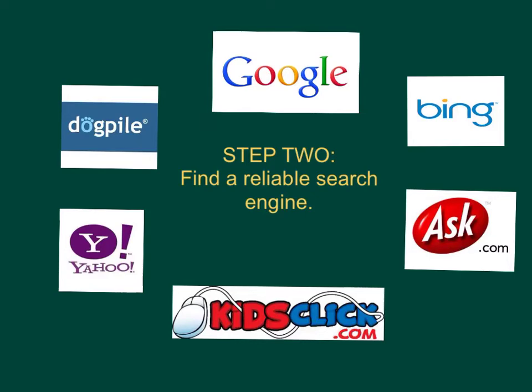Step two is to find a reliable search engine - meaning a trusted website. Some favorites are Google, Bing, Ask.com, Dogpile, and Yahoo. Those are all very good search engines. Kids Click actually searches out and looks for websites that are more kid-friendly, so that is something you may want to try.